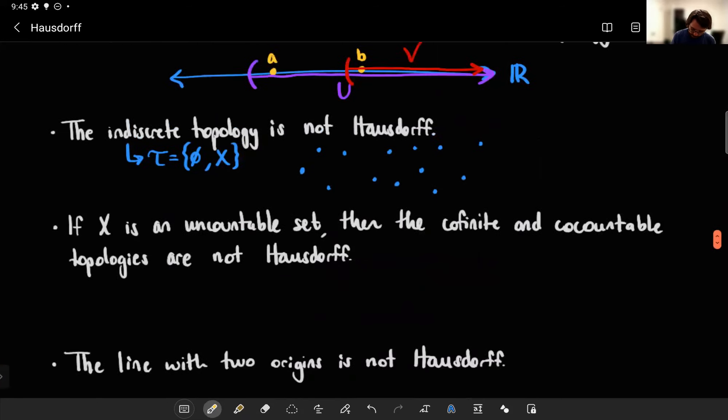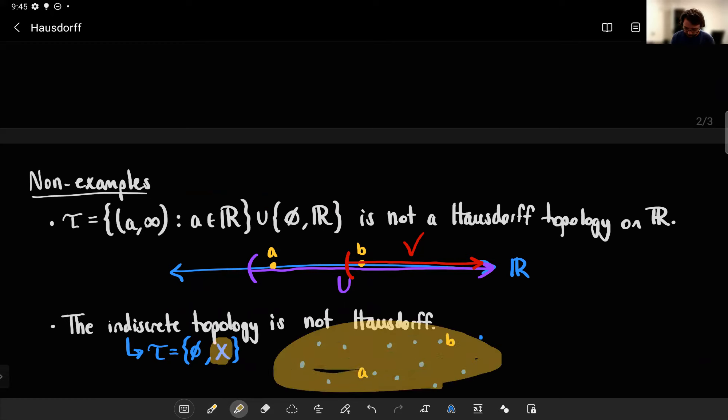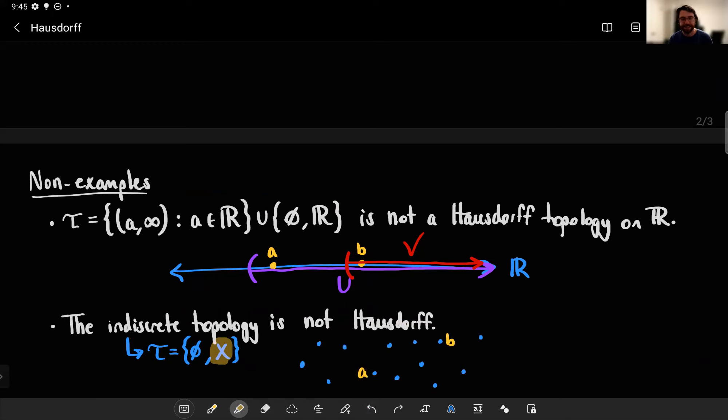If we say this is A and maybe that's B, sure, in the drawing they look far apart, but I have to pick an open set containing each. And guess what? The only open set containing A is the whole space. And same for B. The only open set containing B is the whole space. So definitely not disjoint sets. You have to choose X for both.